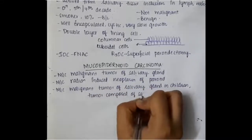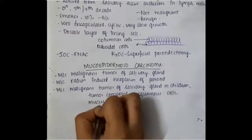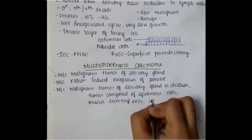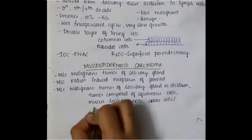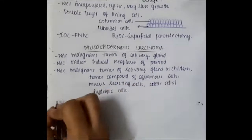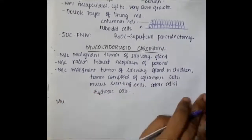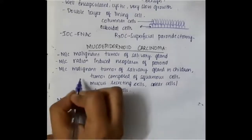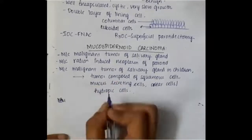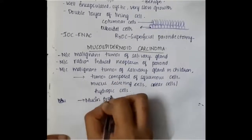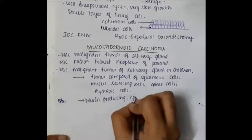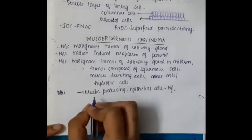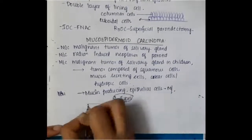This tumor is composed of squamous cells, mucus-secreting cells, clear cells, and hydropic cells. Among all these, the two most important cell types in mucoepidermoid carcinoma are mucin-producing cells and epithelial cells.